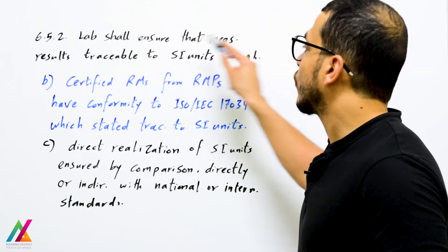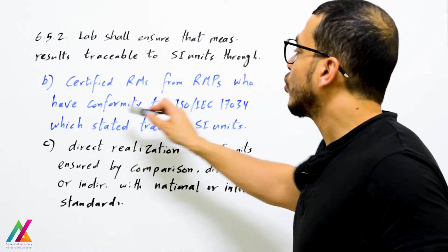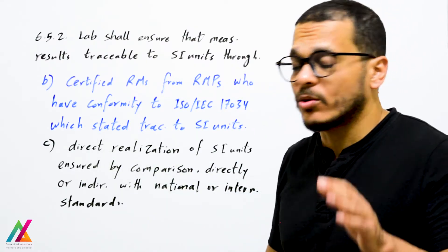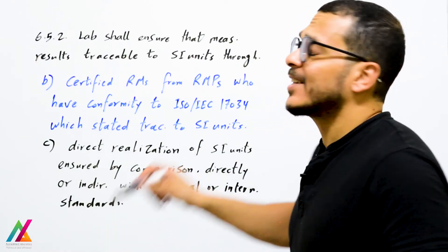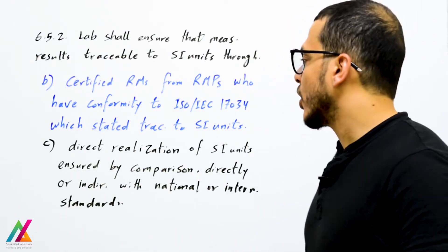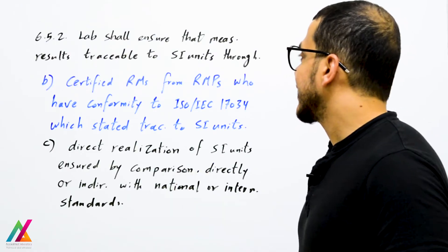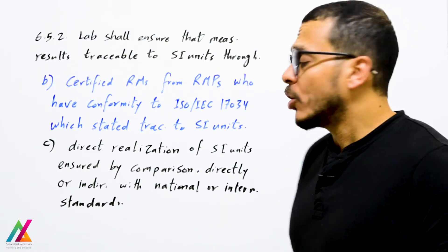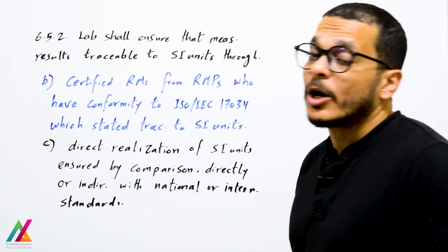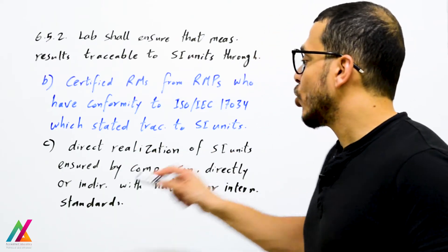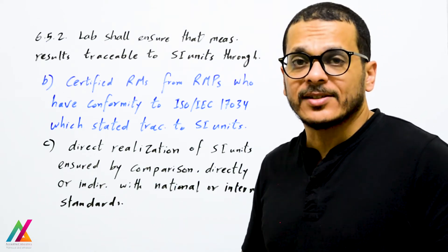To ensure traceability of measurement results to SI units, CRM shall be provided from reference material producers with conformity to ISO/IEC 17034, which states traceability to SI units. The last option is direct realization of SI units, ensured by comparison — directly or indirectly — with national or international standards.